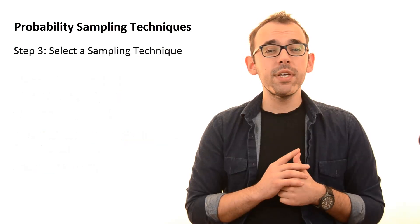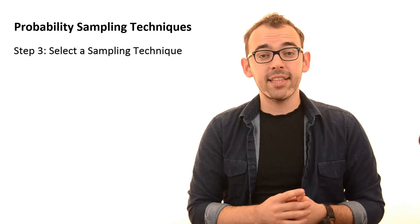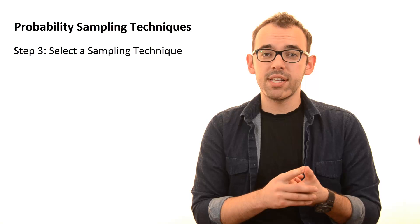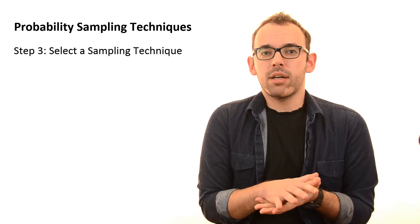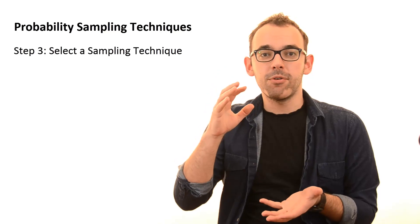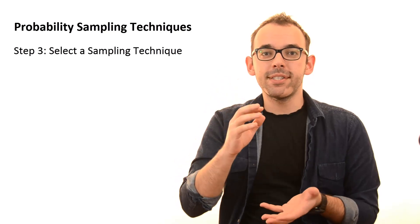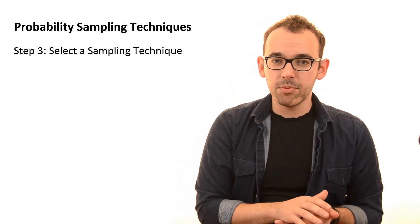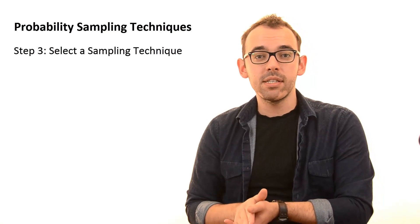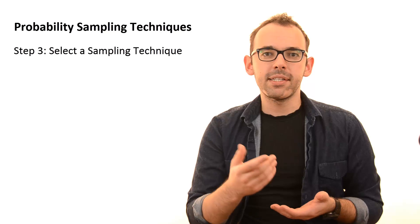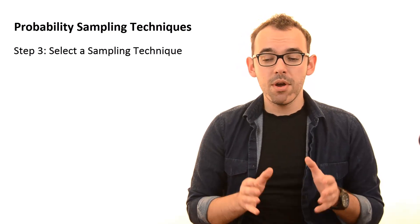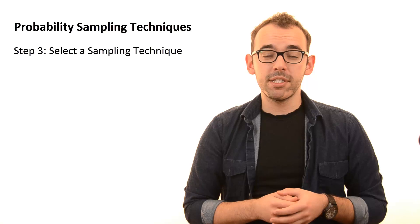We are now moving to step 3, which is selecting a sampling technique. We already have our sampling frame — most likely some Excel sheet with maybe 1,000 names of students at our university — and in step 2 we calculated our sample size, which in our example is 278 cases. Now let's go through the sampling techniques.